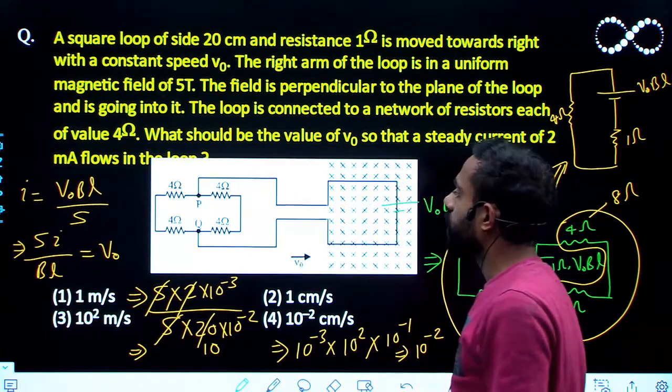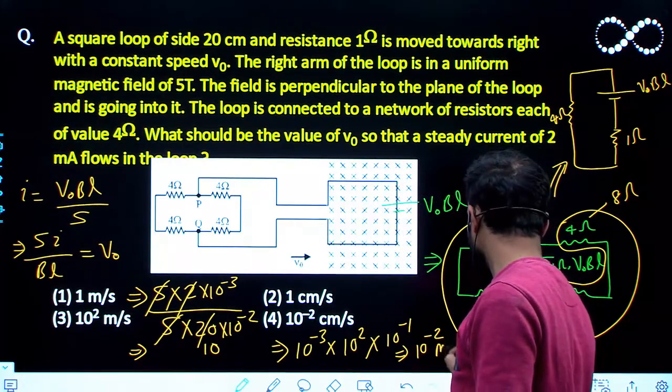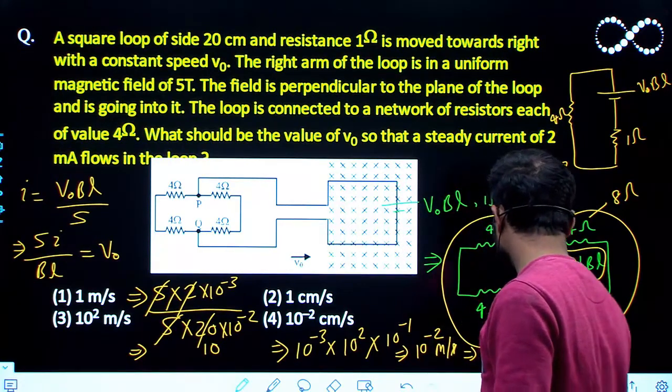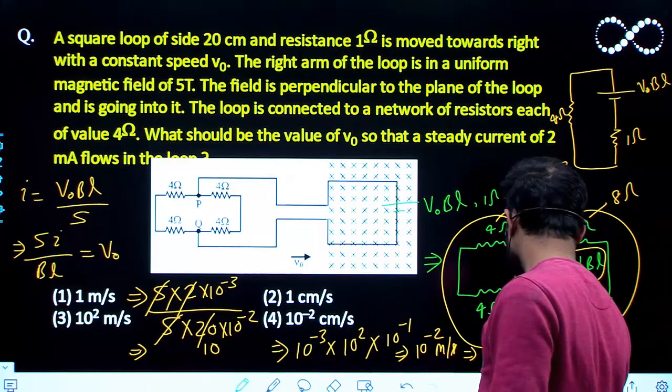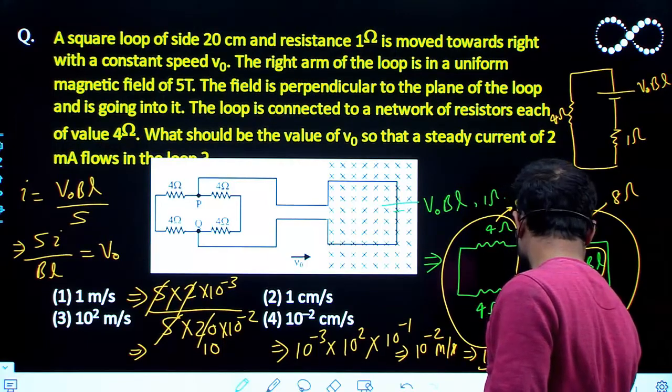And since I am working everything in SI unit, that will be this much meter per second. So 10 to the power minus 2 meter is nothing but 1 centimeter per second. So 1 centimeter per second will be the answer.